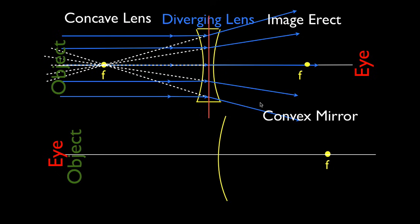This is a diverging lens — the rays are bent in such a way that they appear to come from the focal point. When you draw them, you have to bend them so that you can draw them back to the focal point; they all have to look like they're coming from the focal point. Do they actually come from the focal point? No — and that's the definition of a virtual image.